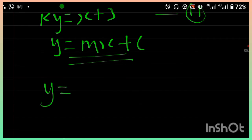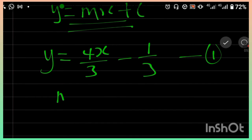In equation 1, I have y is equal to 4x over 3 minus 1 over 3, equation 1. It means that my m1 is equal to 4 over 3.